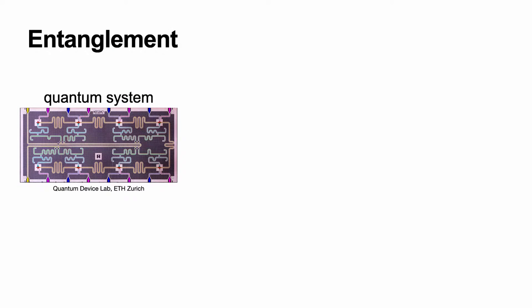Why are hot topics in quantum research, such as quantum systems in the form of quantum devices — for example, this very beautiful 8-qubit quantum processor developed in Andreas Wallraff's quantum device lab across the street — why are they so hot? Because they promise to be very powerful at solving very complicated tasks. And what makes them so powerful? It's actually their ability to create and harness entanglement in these systems.